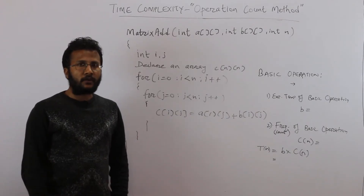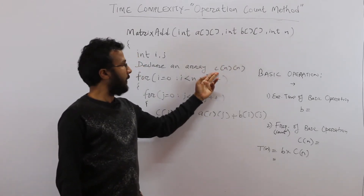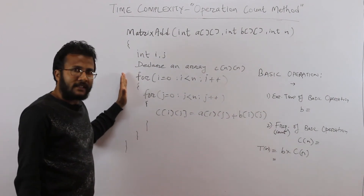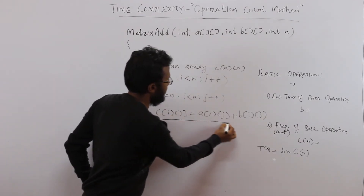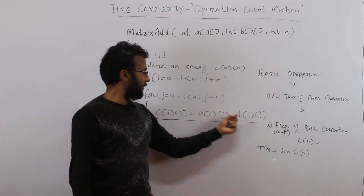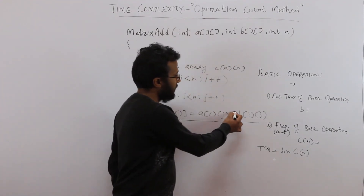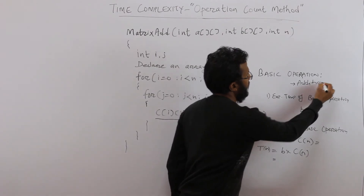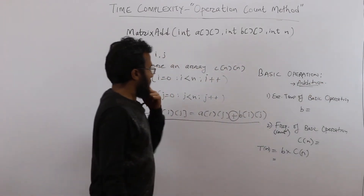Let's take one more example — an algorithm for adding two matrices A and B and storing the result in matrix C. We need to identify the basic operation. As mentioned, if there are loops, the basic operation lies in the innermost loop. There is one statement inside the innermost loop: it performs addition of elements from matrices A and B and stores the result in C. So the basic operation is addition.